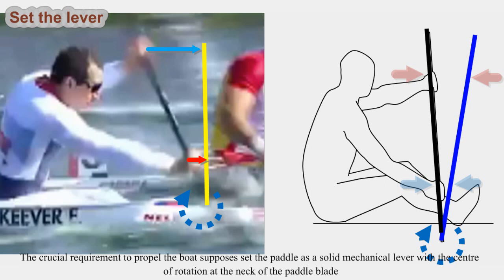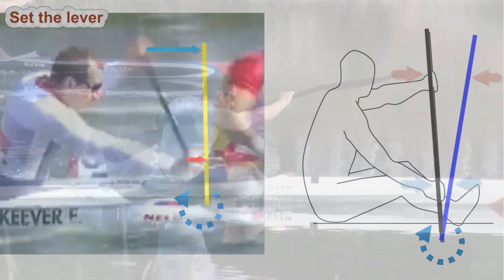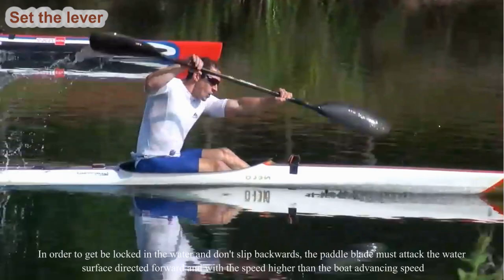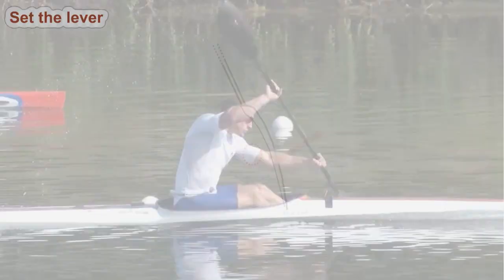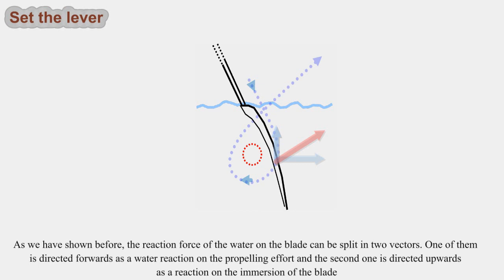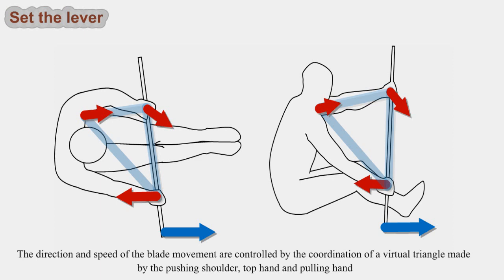The crucial requirement to propel the boat is to set the paddle as a solid mechanical lever with the center of rotation at the neck of the paddle blade. In order to get the blade locked in the water and not slip backwards, the paddle blade must attack the water's surface directed forward and with speed higher than the boat's advancing speed. The reaction force of the water on the blade can be split into two vectors: one directed forwards as a reaction on the propelling effort, and one directed upwards as a reaction on the immersion of the blade. The direction and speed of the blade movement are controlled by the coordination of a virtual triangle made by the pushing shoulder, top hand, and pulling hand.